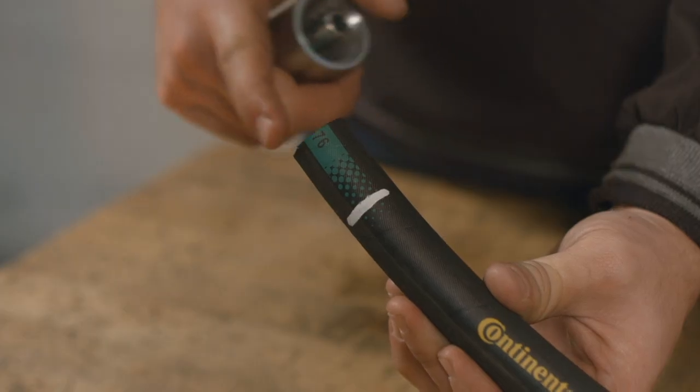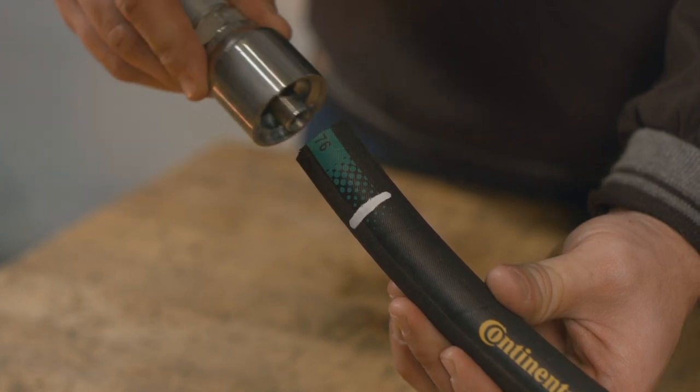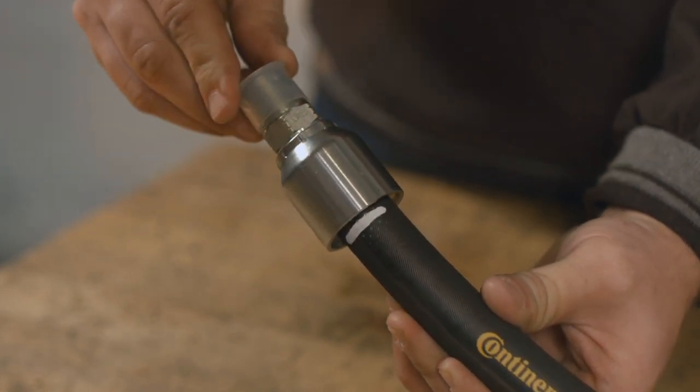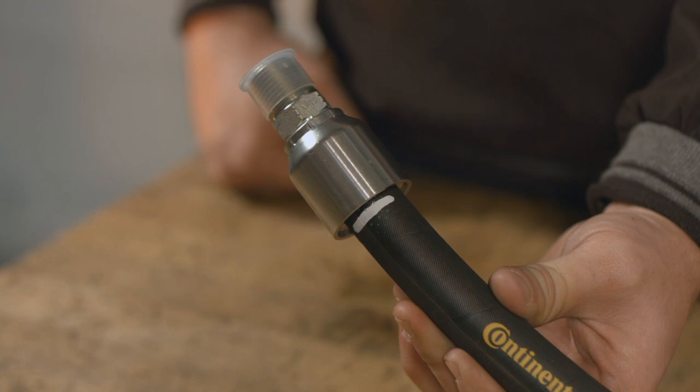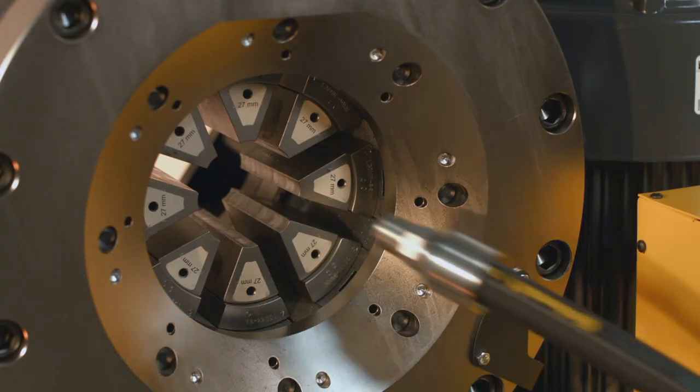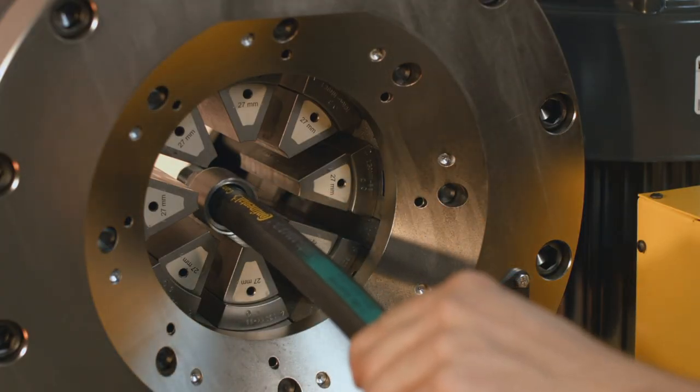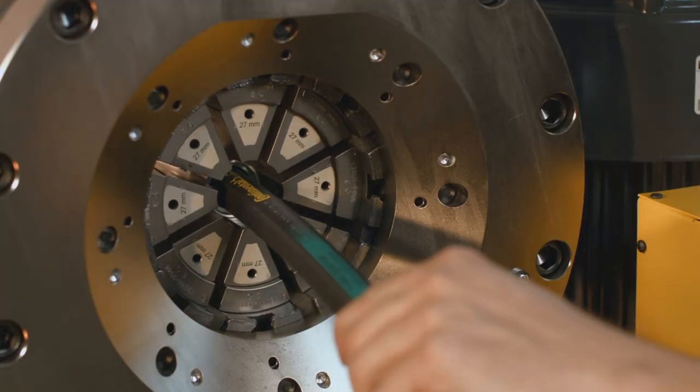Next, fully insert the hose into the fitting, ensuring that the correct insertion depth is achieved. You may twist and rotate the fitting as needed. Finally, insert the assembly into the crimper and press the green close button.